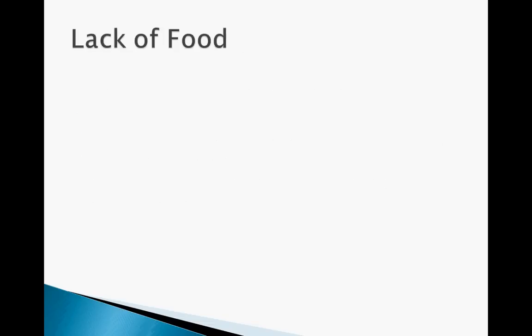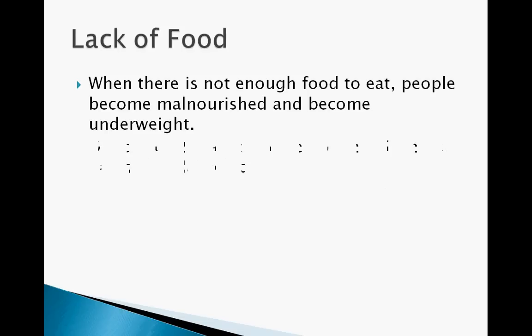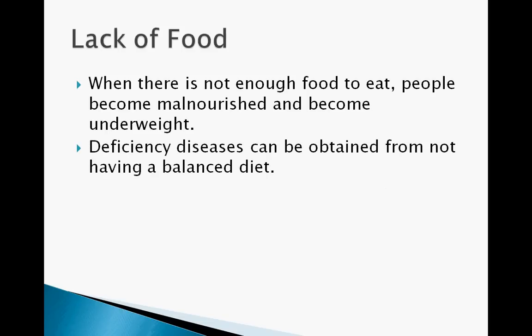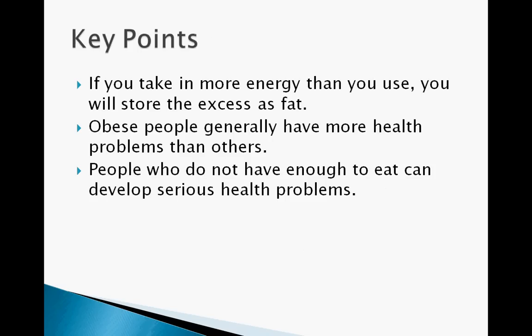A lack of food: in some parts of the world, many people are underweight and malnourished because there isn't enough food to eat. Deficiency diseases due to lack of mineral ions and vitamins are common in both children and adults when they don't have enough food. Deficiency diseases can also occur if you don't have a correct balanced diet. Key points: if you take in more energy than you use, you store the excess as fat; obese people generally have more health problems; and people without enough food can develop serious health problems.